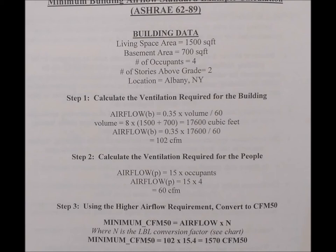Minimum Building Airflow Standard Example Calculation. Building data: Living Space Area equals 1,500 square feet; Basement Area equals 700 square feet; Number of Occupants equals 4; Number of Stories Above Grade equals 2; Location: Albany, New York. Step 1: Calculate the ventilation required for the building. Airflow B equals 0.35 times volume divided by 60.